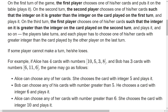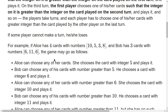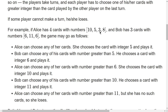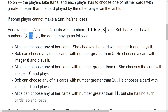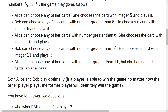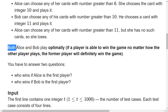For example, if Alice has four cards numbered 10, 5, 3, and 8, and Bob has three cards numbered 6, 11, and 6, the game may go as follows. Bob plays 5, Alice can play 6, then Bob can play 8 or 10. If Bob plays 10, Alice can play 10, Bob plays 11, and then Alice doesn't have a card greater than 11, so Alice loses.